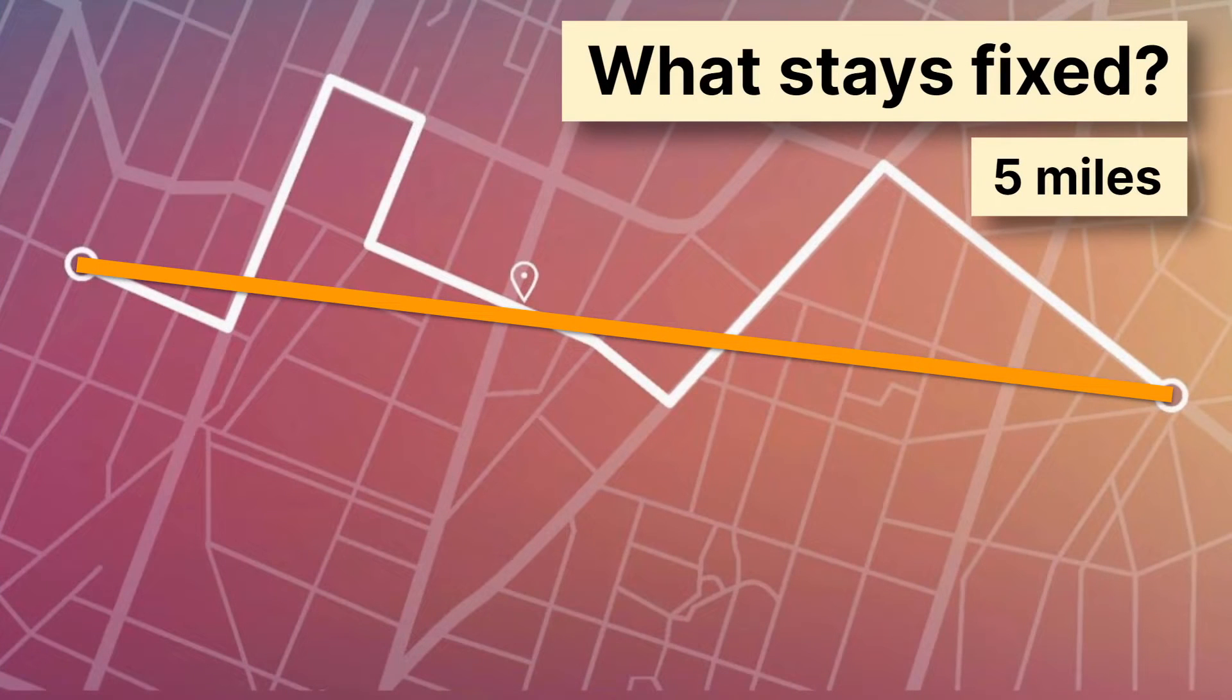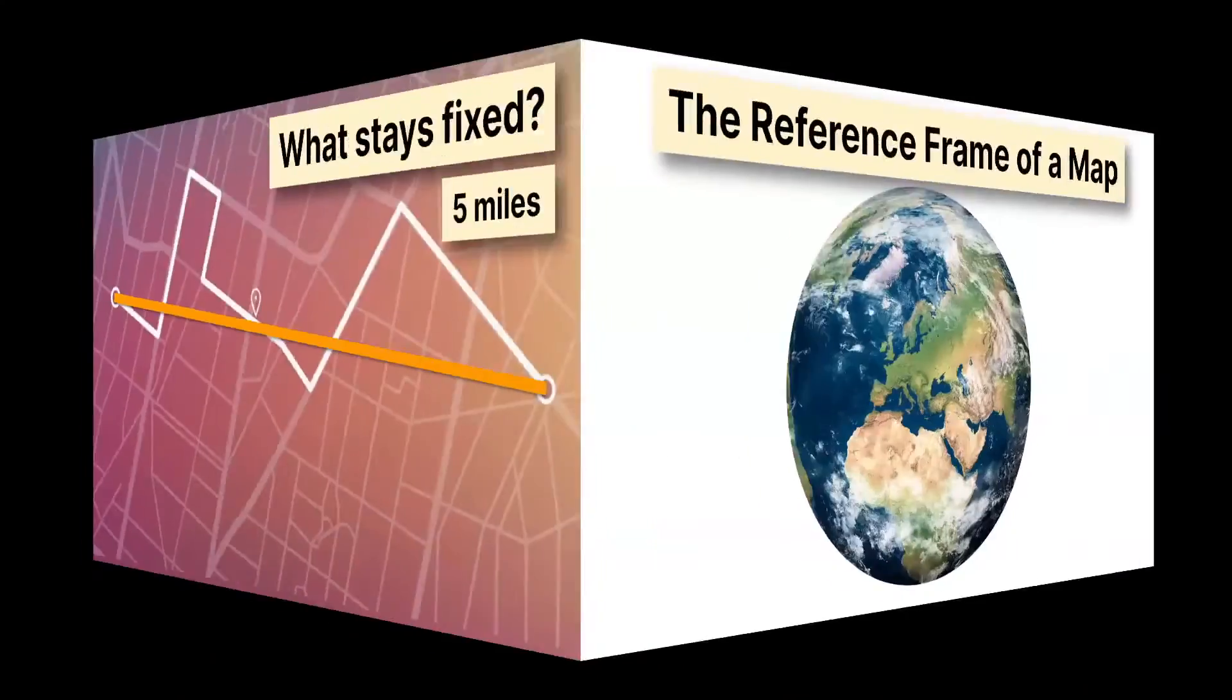Now when we look at this map something is staying fixed while we move. We have our distance and displacement both shown. What's staying fixed? Well of course it's the Earth's surface.